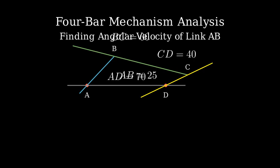Initially, link AB makes a 30 degrees angle with the horizontal. Link BC makes a 60 degrees angle with the horizontal. Link CD makes a 120 degrees angle with the horizontal. The lengths of the links are AB equals 25 centimeters, BC equals 60 centimeters, CD equals 40 centimeters, and AD equals 70 centimeters.